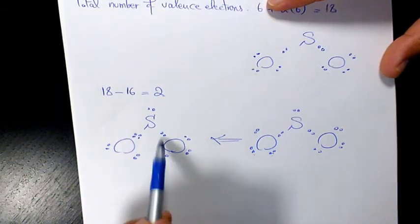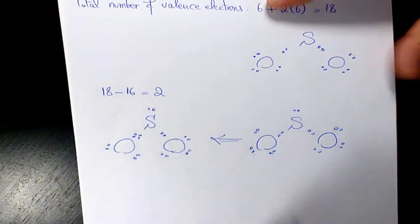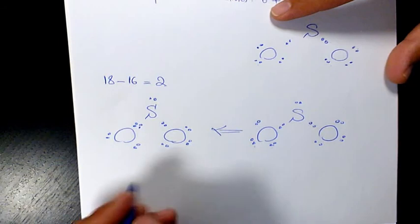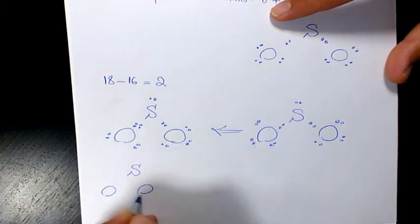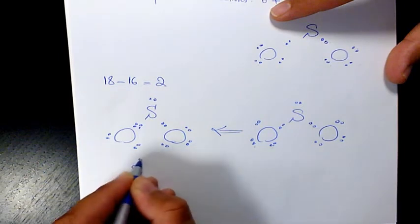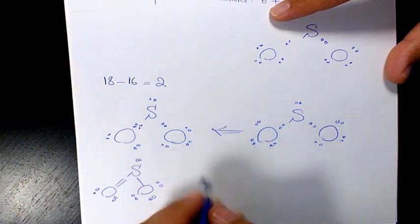Right now 2, 4, 6, 8 for oxygen, 2, 4, 6, 8 for this oxygen, and for sulfur we have 2, 4, 6, 8. So all of them have an octet. So SO2 is going to be like that, and it is resonating.